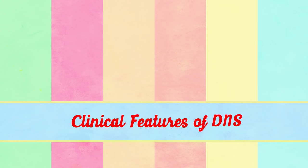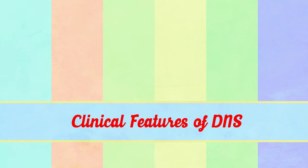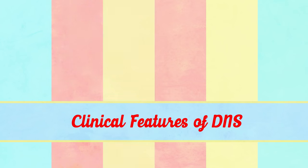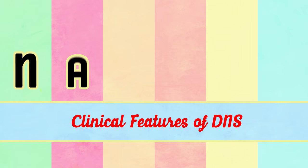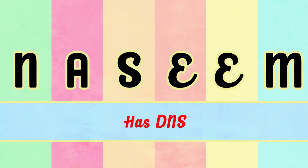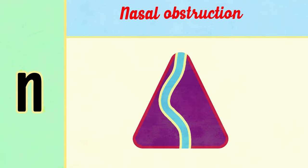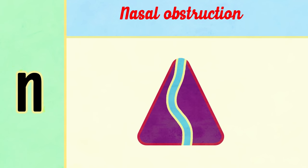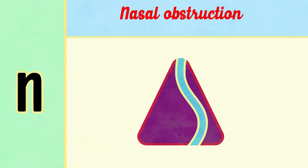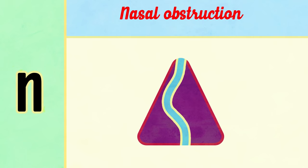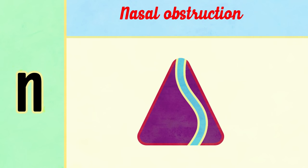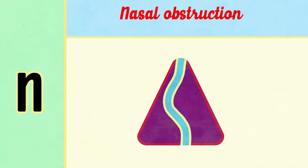Clinical features of DNS can be simply remembered using the mnemonic 'Nassim has DNS.' N is for nasal obstruction — naturally, any deviation in the nasal septum causes less nasal space and results in nasal obstruction on the side of the DNS.